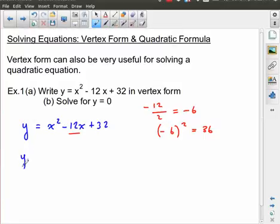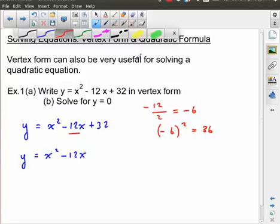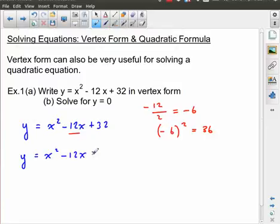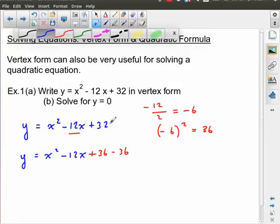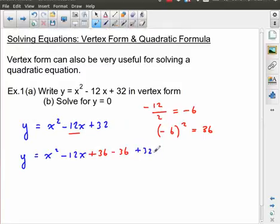So to put that into vertex form, what I do is I keep the first two terms, the quadratic term and the linear term, and then I do what's called completing the square. I want to create a perfect square trinomial. And plus 36 would be what I need to take those three into a perfect square. But I can't make 36 appear out of nowhere, so I subtract 36.